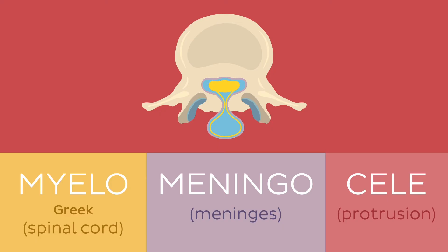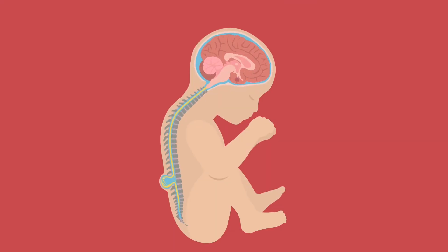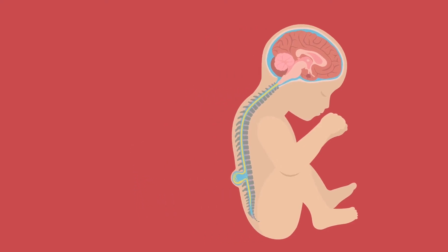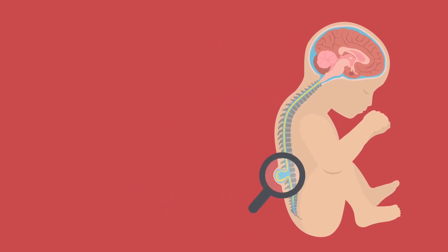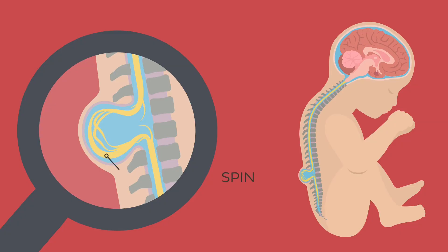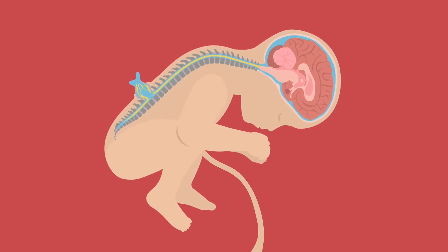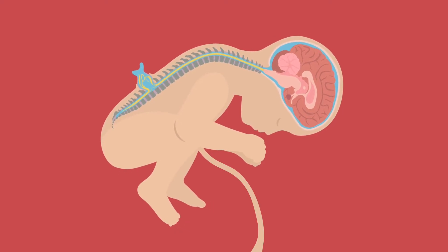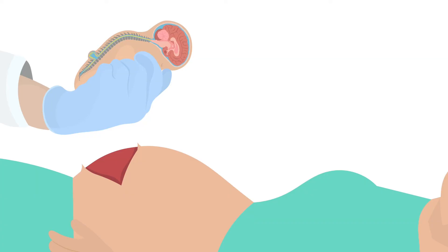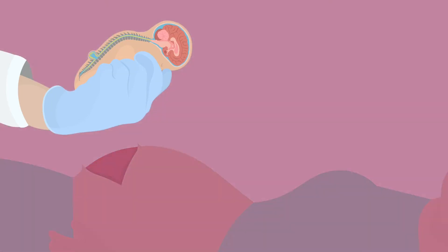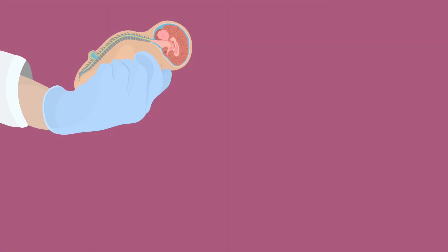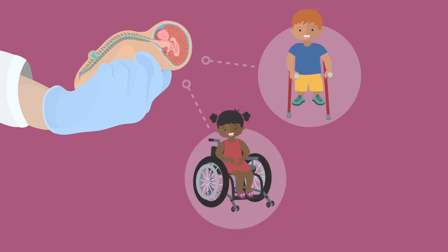Myelomeningocele is the most severe form of spina bifida. It is usually found in the lumbar or sacral regions of the back. It also looks like a sack similar to meningocele, but also containing parts of the spinal cord and spinal nerves. The sac could rupture during labour, exposing the spinal cord to the external environment, which is why these children are usually delivered through a C-section. Children with this form of spina bifida usually show some sort of paralysis due to a damaged spinal cord and nerves.